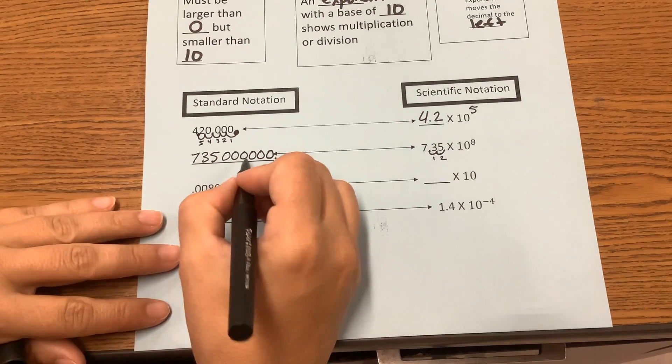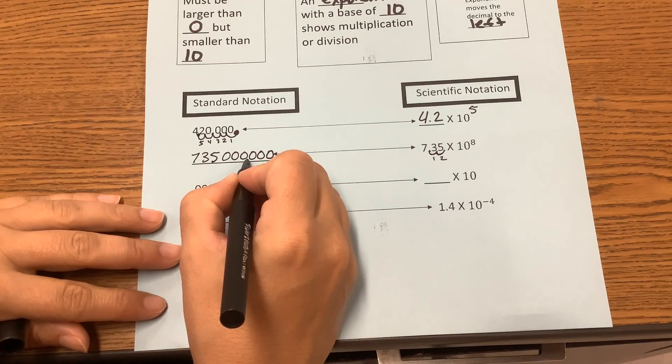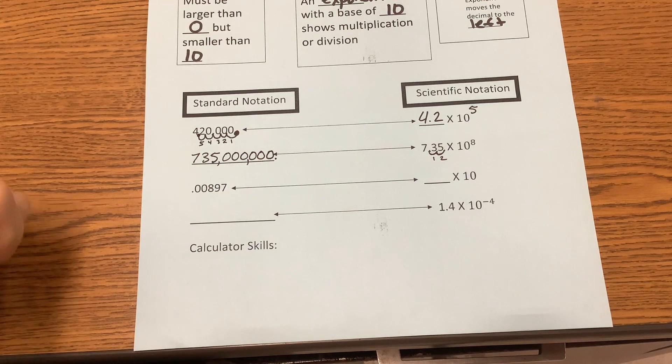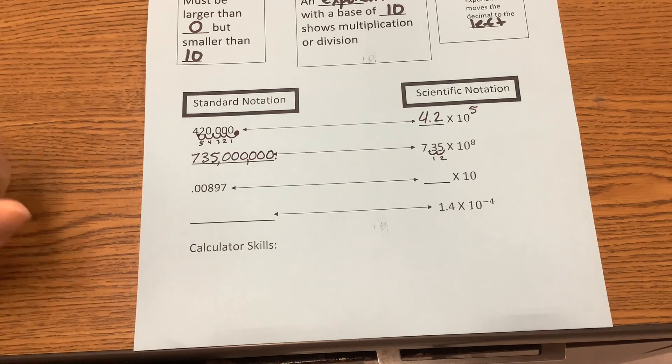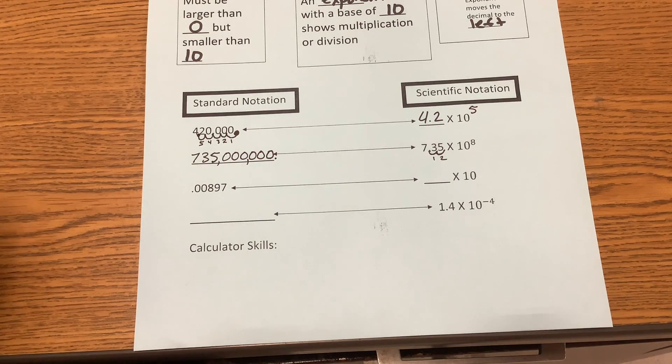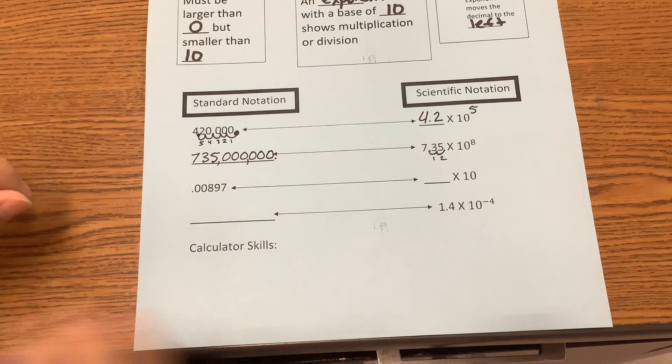If you wanted to show the thousands place, you could place your commas in there. So it's 735 million.